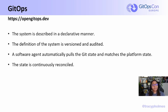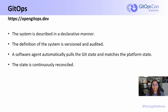The principles of GitOps are as follows. The system is described in a declarative manner — in practice, this typically means Kubernetes manifests. The definition of the system is versioned and audited — in practice, it's typically stored in Git. A software agent automatically pulls the Git state and matches the platform state — in practice, this would mean Argo CD or Flux.